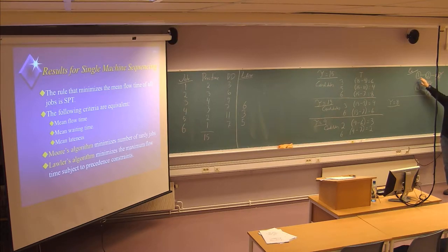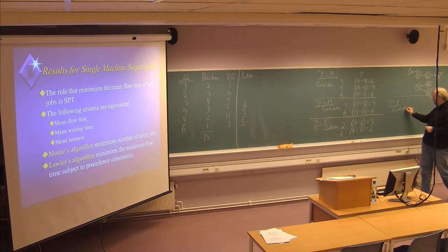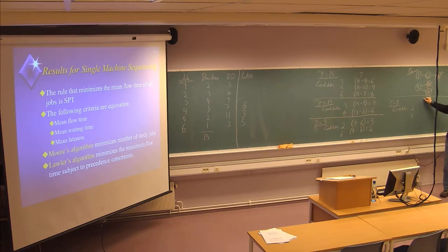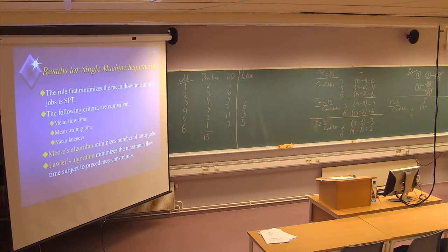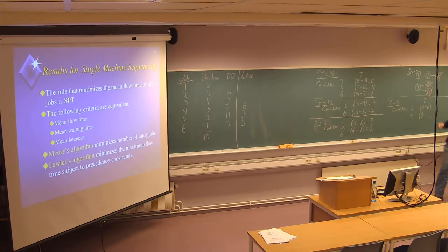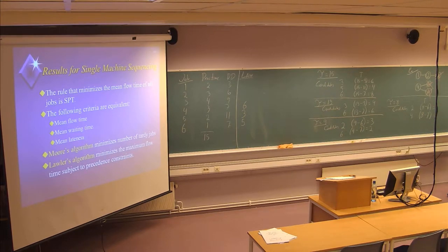We cannot choose job number one because it needs to be performed before number two. So the candidates will be either job number two or job number four. The tardiness of these two jobs at that position will be: for job two, tau value of eight minus due date of three — the due date is six; and for job number four, eight minus the due date of seven. This gives values of two and one respectively.